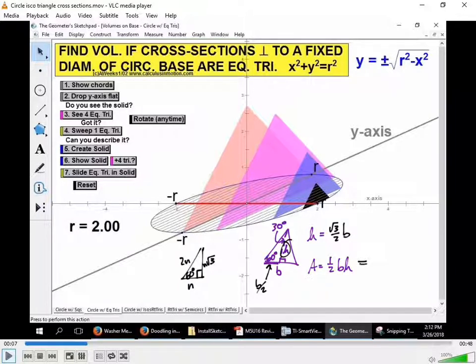That means I can rewrite this. I don't have to say B times H anymore. I can say 1 half times B times rad 3 over 2 times B, which can also be simplified. What can that be simplified to? Rad 3 over 4B squared. So here is our area in terms of B.